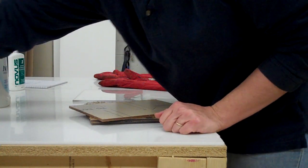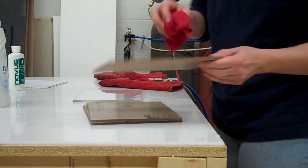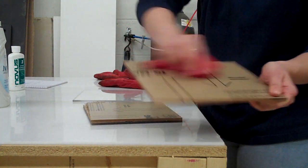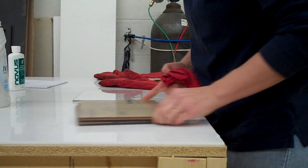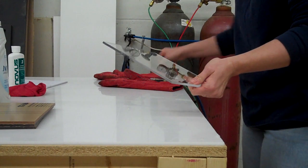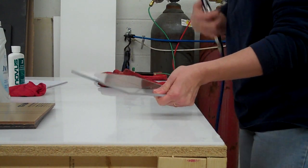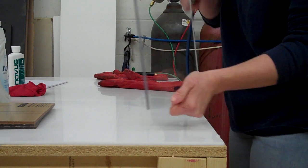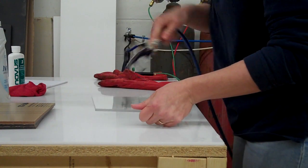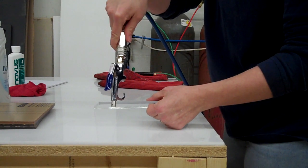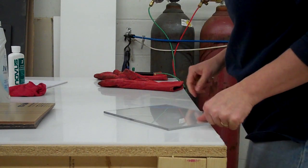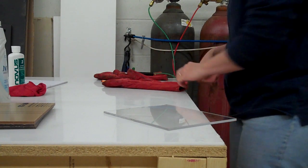We're going to start with taking a damp rag and wiping all this router mess off. We're going to set this off to the side. I already have one done here. We're gonna give it a nice little blow - any of that debris will melt into your plexi and you won't like it.